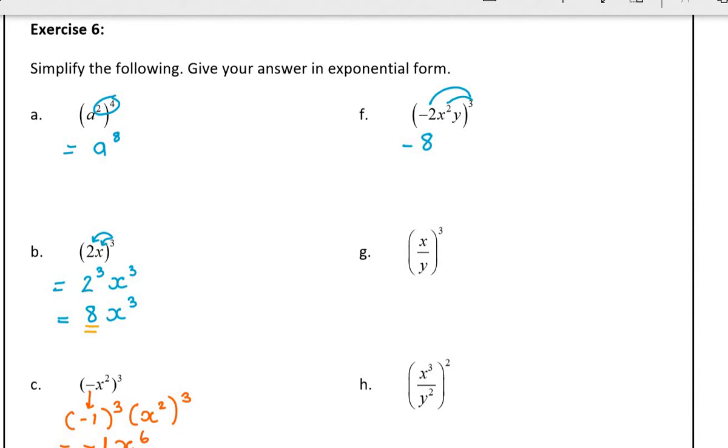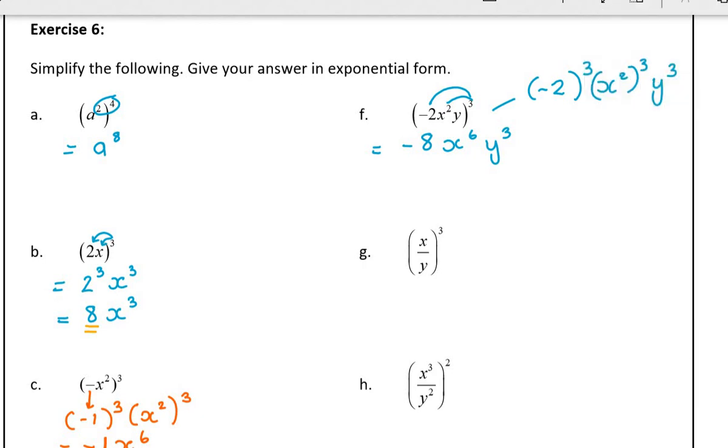Then when I raise a power to another power, I multiply, so I get 6 and y cubed. Again, if you're going to make a mistake, there's nothing wrong with writing out the intermediate step, which is negative 2 cubed, x squared, cubed, and y cubed. So you must go at the pace that will suit you.